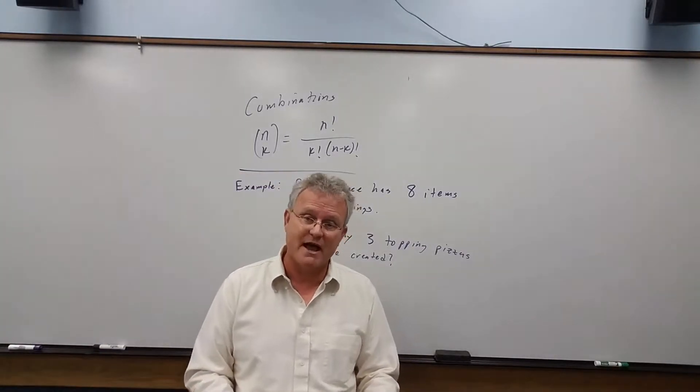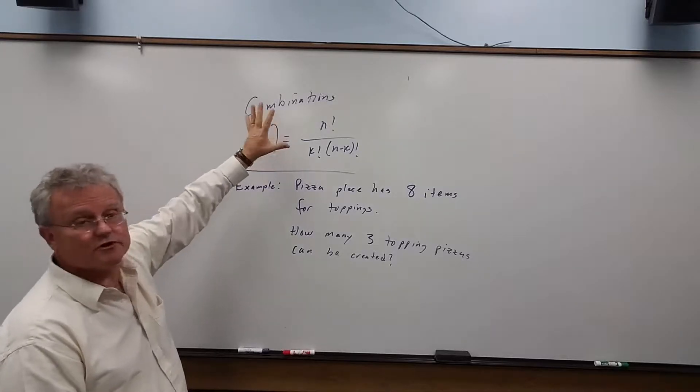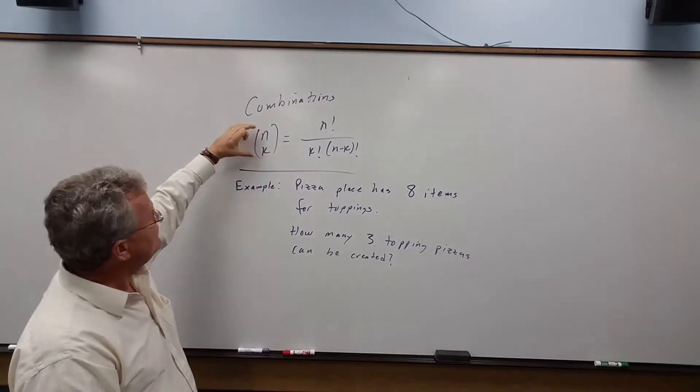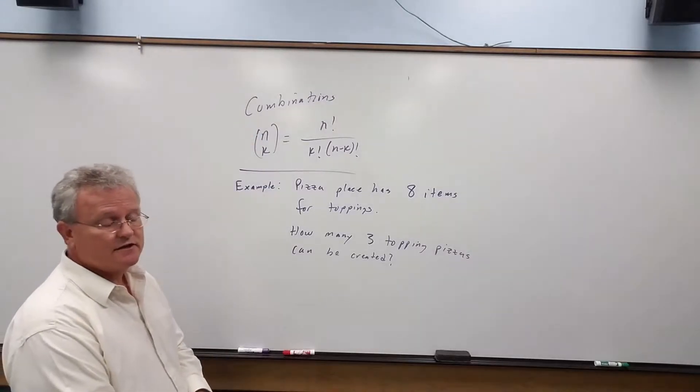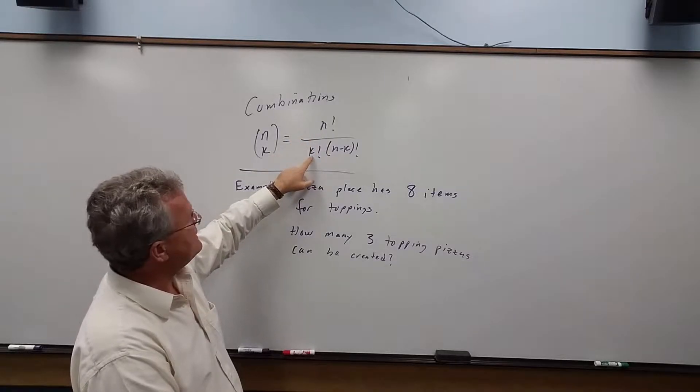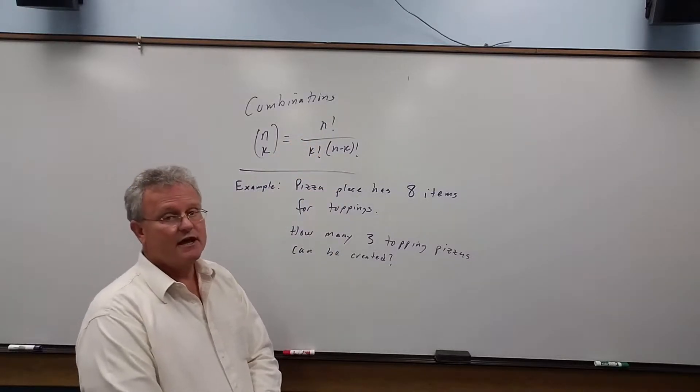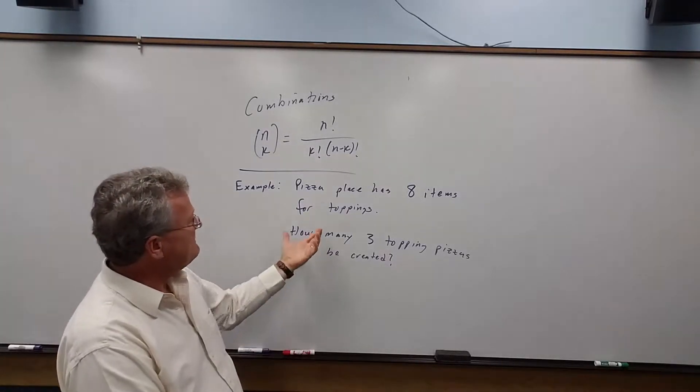Permutations, the order does matter. Okay, so for combinations, the order doesn't matter, and we read this notation as n choose k. We'll explain what that is in a second, but that's equal to n factorial over k factorial times the quantity n minus k factorial. So what do we mean here?